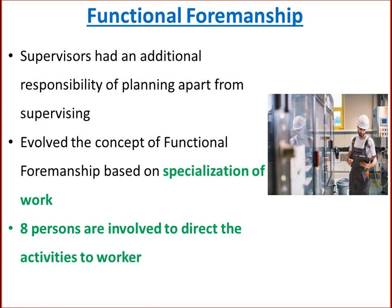The second element of scientific management is functional foremanship. Since planning was separated from doing, supervisors now had additional responsibility of planning apart from simple supervision — effectively working double. Taylor evolved a concept of functional foremanship based on specialization of functions. He divided the functions of supervisors into 8 different categories, so 8 persons are involved in directing the activities of workers. Under a factory manager, there are two categories: planning in-charge and production in-charge.